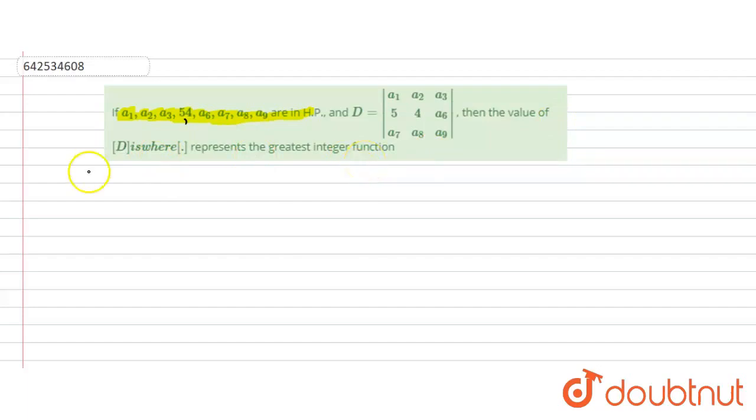And D is equal to this, then the value of this represents the greatest integer function. What we have given is A1, A2, A3, 5, 4, A6, A7, A8 and A9 are in HP.